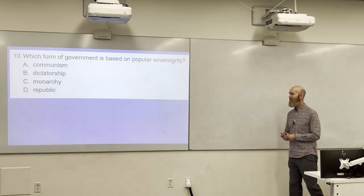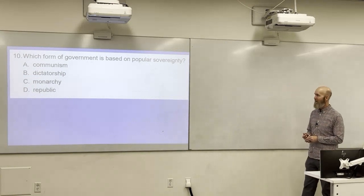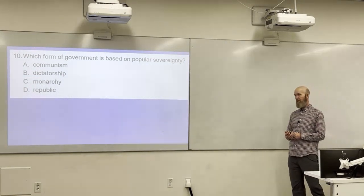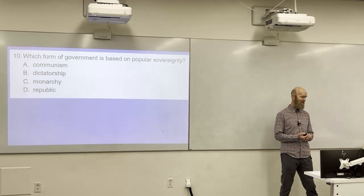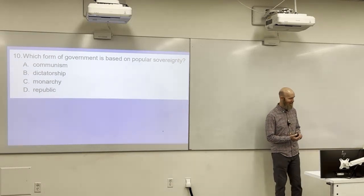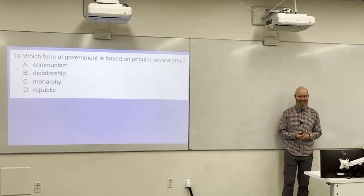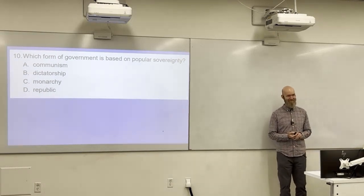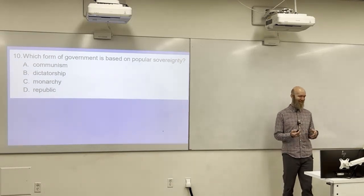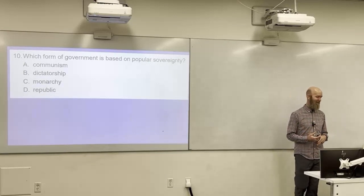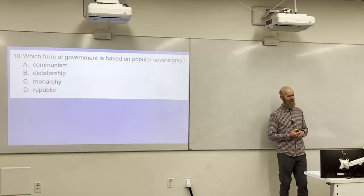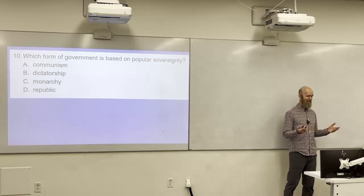Which form of government is based on popular sovereignty? A: communism. B: dictatorship. C: monarchy. D: republic. The answer is D — in a republic, the people are in control of the government. We have a republic.